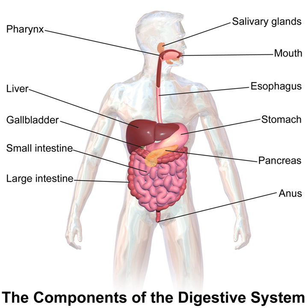The intestinal phase has two parts: the excitatory and the inhibitory. Partially digested food fills the duodenum, which triggers intestinal gastrin to be released. Enterogastric reflex inhibits vagal nuclei, activating sympathetic fibers causing the pyloric sphincter to tighten to prevent more food from entering, and inhibits local reflexes.